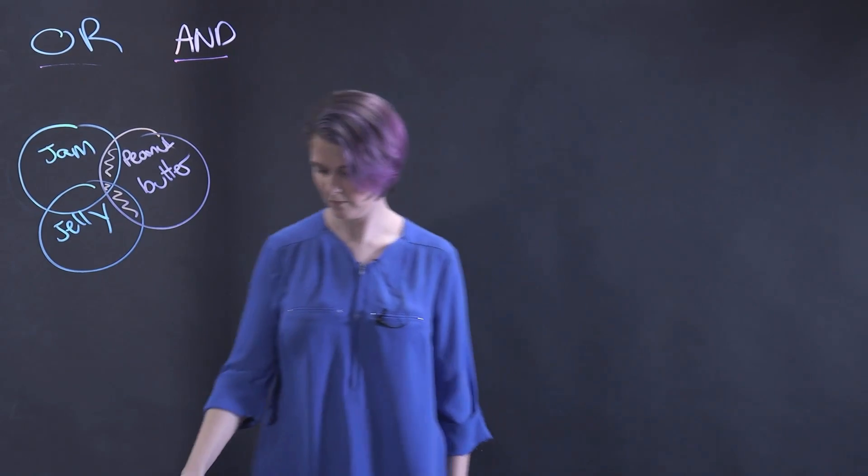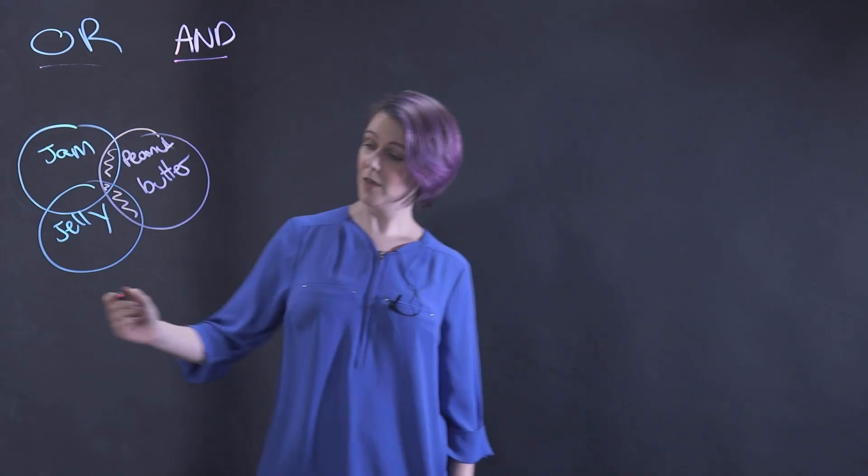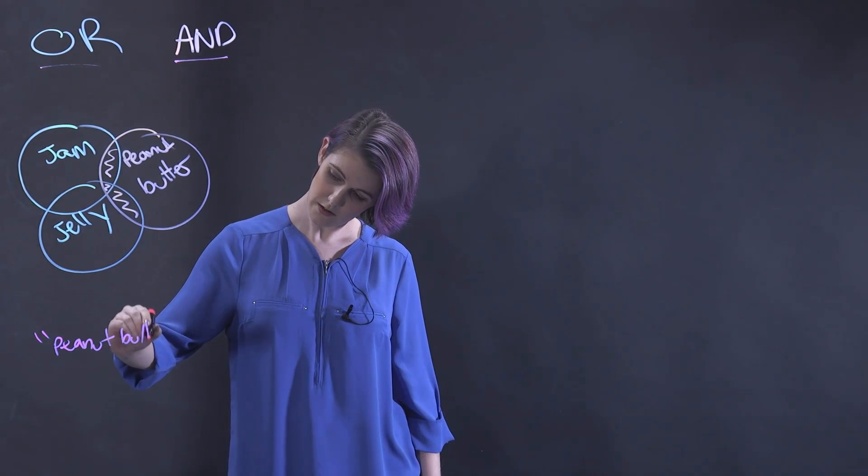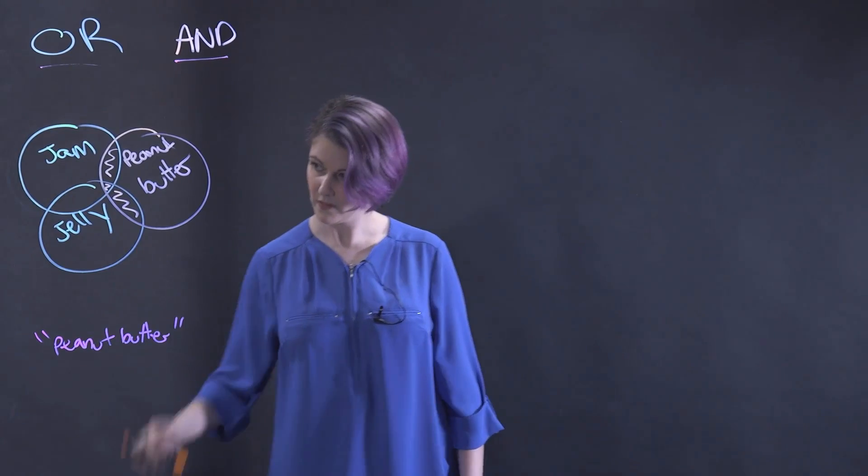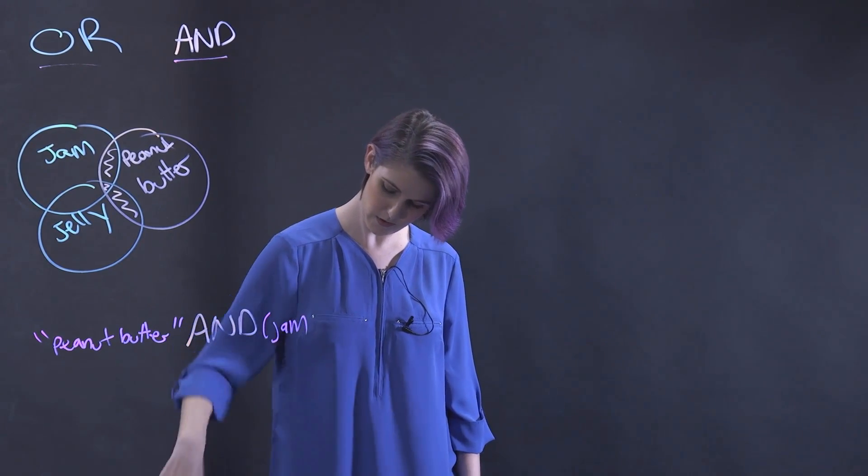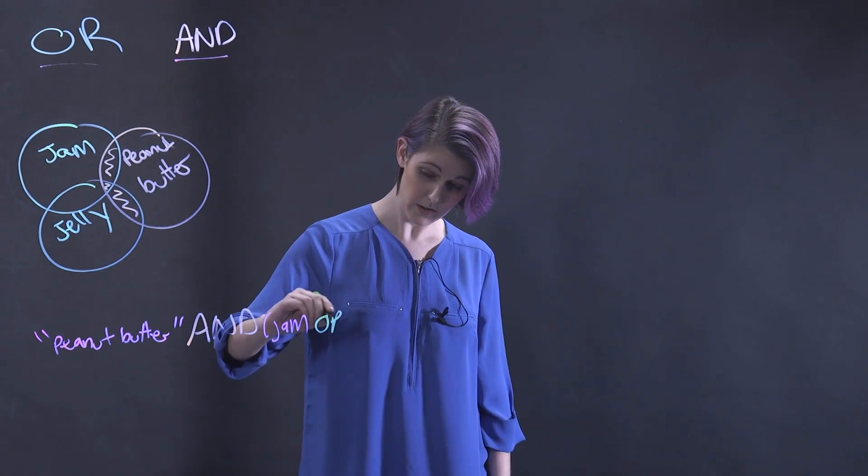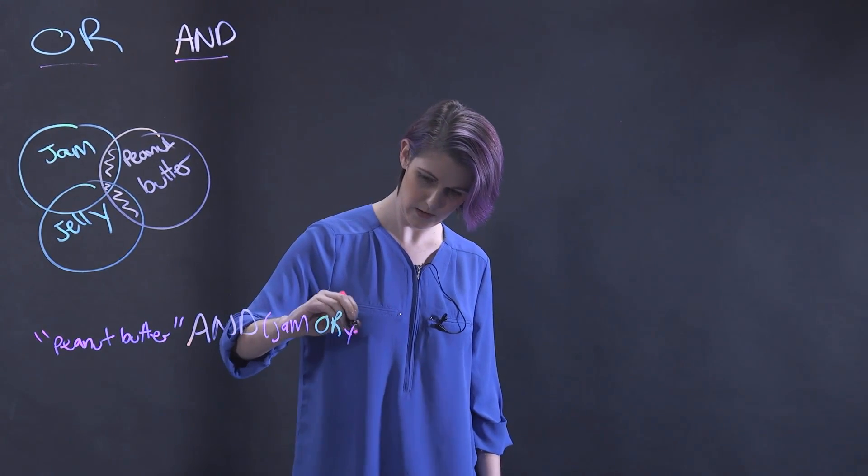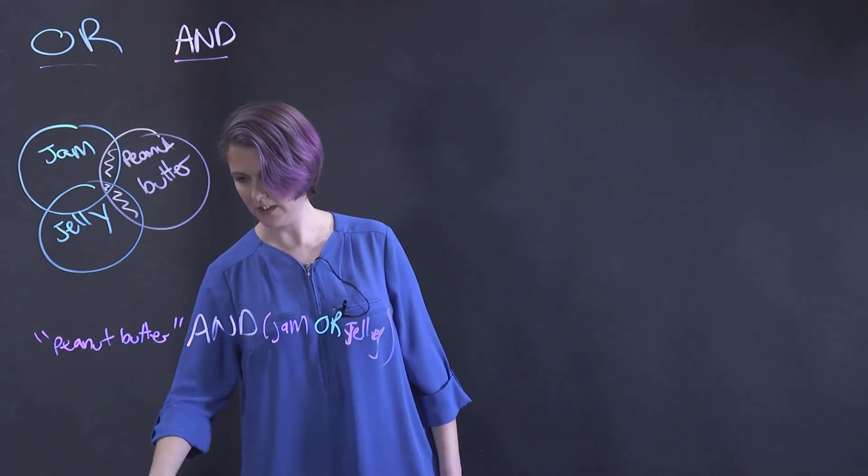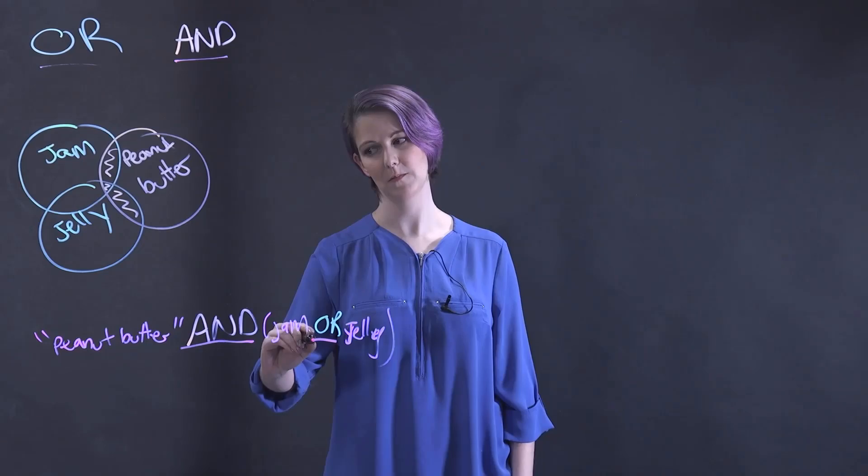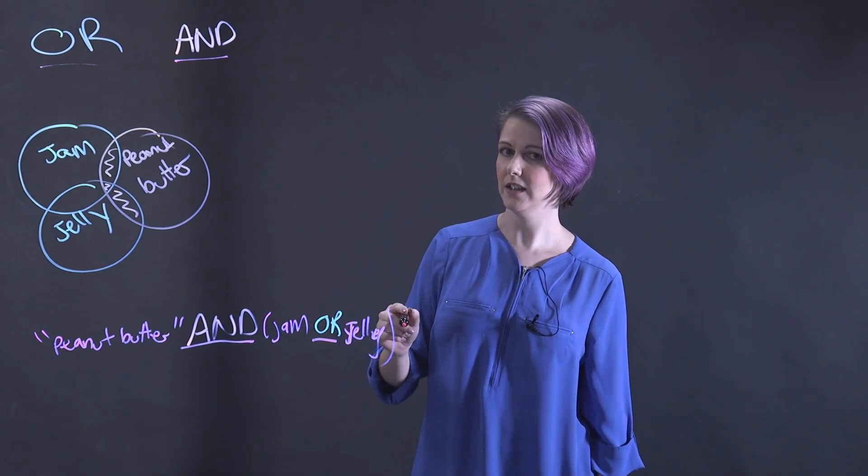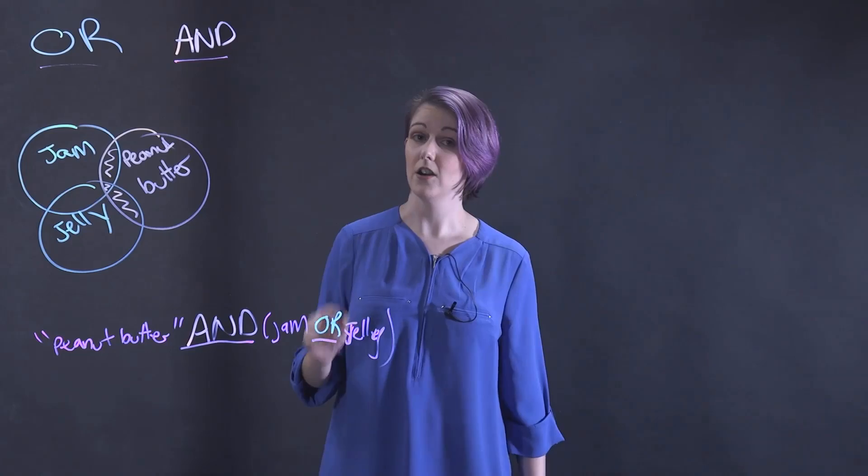So how does this work in an actual search? In the example above, our final search might be peanut butter and jam or jelly. Generally, you need to capitalize your Boolean operators in a database. The double quotations around peanut butter keeps these words together, and the brackets around jam or jelly means that these will be ORed together before they are ANDed with peanut butter.